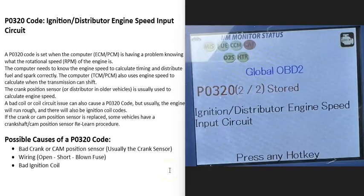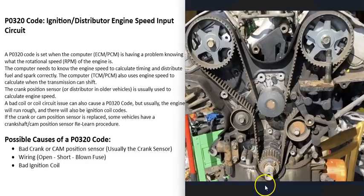So what is a P0320 code? It's an ignition distributor engine speed input circuit. Basically, the whole engine needs to be timed correctly, so that fuel goes into the cylinders at the right time and the spark ignites the fuel at the right time.